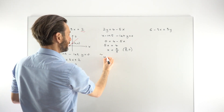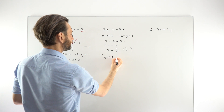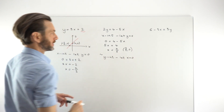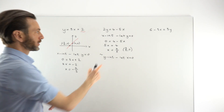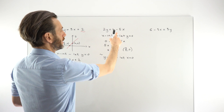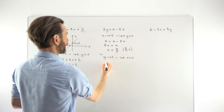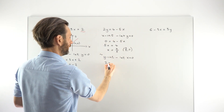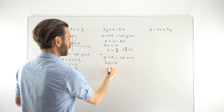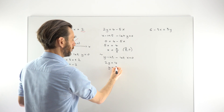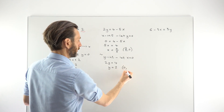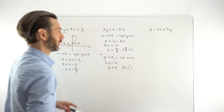To find the y-intercept, we let x be 0, because we know the y-intercept has a 0 x-coordinate. Putting 0 in for x, we get 2y equals 4 minus 0, which is just 2y equals 4. Dividing both sides by 2, we get y equals 2. So the full coordinate for the y-intercept is (0, 2).